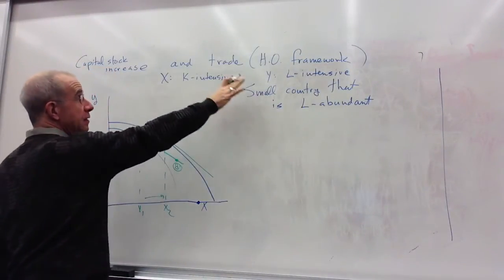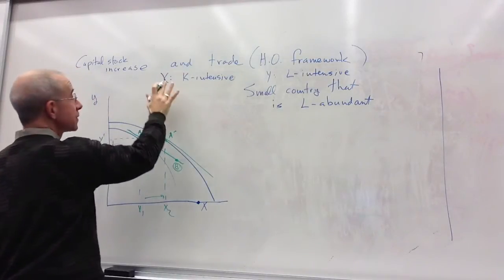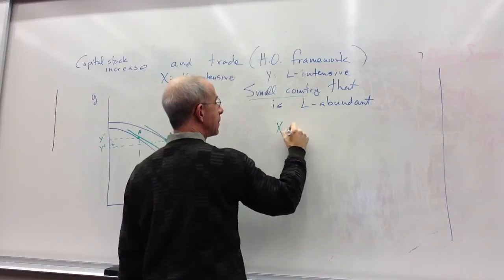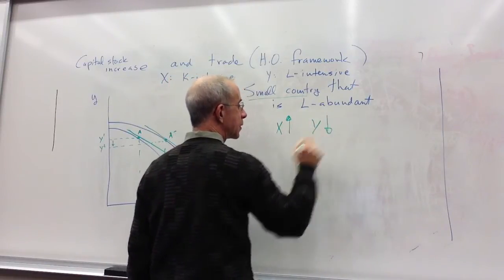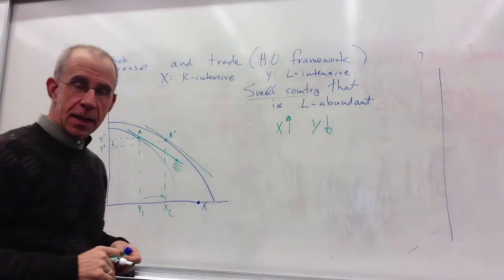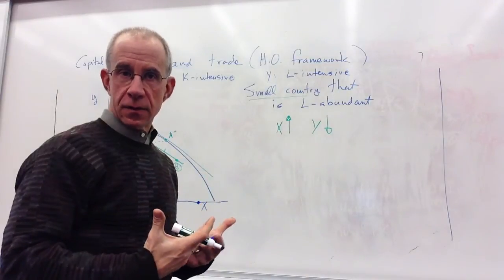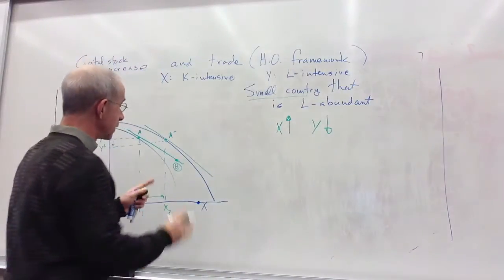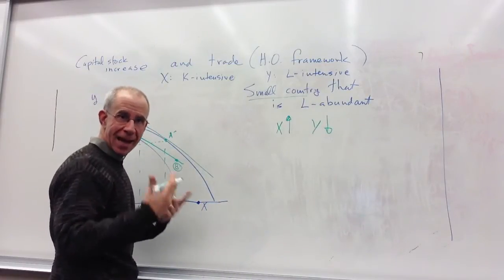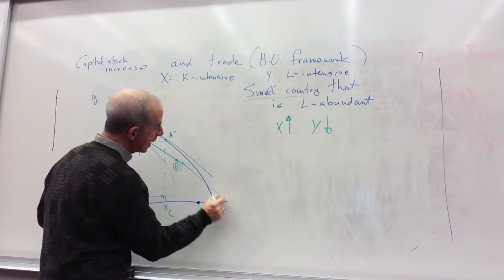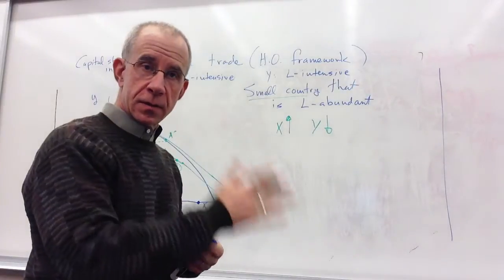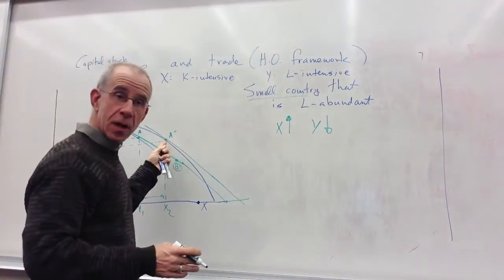So when you have a capital stock increase in the labor-abundant country at fixed prices, the production of X goes up and the production of Y goes down. The national income has gone up, because the green line — with slope equal to world prices going through the production point — represents the value of national income. So the increase in resources increases the amount that you can ultimately consume.